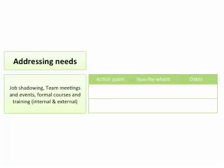A typical training plan might start with the points of action down the left-hand side — these would be the SMART targets. Then 'how and by whom': do they need to book onto a course, buy a particular book to read, or engage in a training session once a week? And then the dates: when does it start, how often will it happen, and when is the expected end?